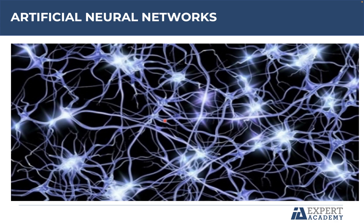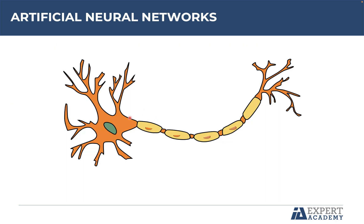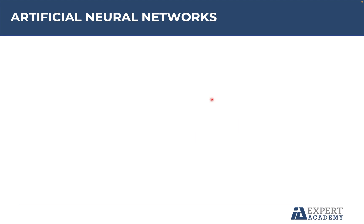Now that you have already learned this basic idea, we will look at the neuron and analyze its components. You can see in this image the neural representation and we are going to analyze four main components, which are the dendrites, the cell body, the axon, and the axon terminals. To understand these components, let's analyze only one neuron first.